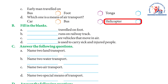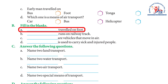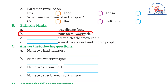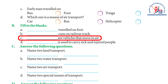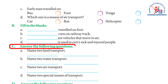Exercise B — Fill in the blanks: (a) Dash traveled on foot — Answer: Early man. (b) Dash runs on railway tracks — Answer: Train. (c) Dash are vehicles that move in air — Answer: Aeroplanes and helicopters. (d) Dash is used to carry sick and injured people — Answer: Ambulance.